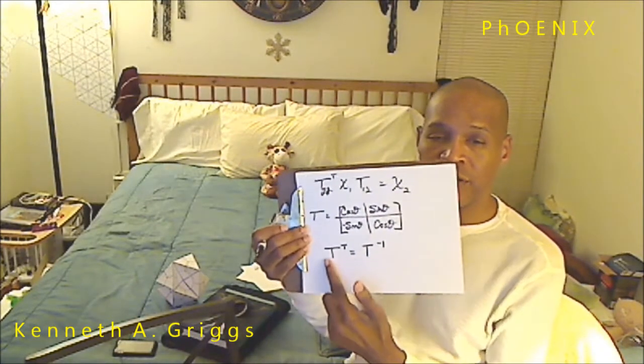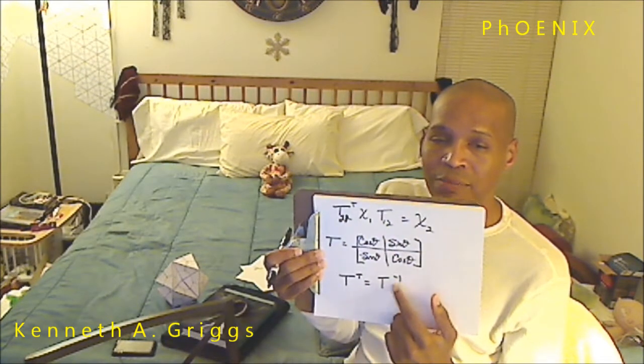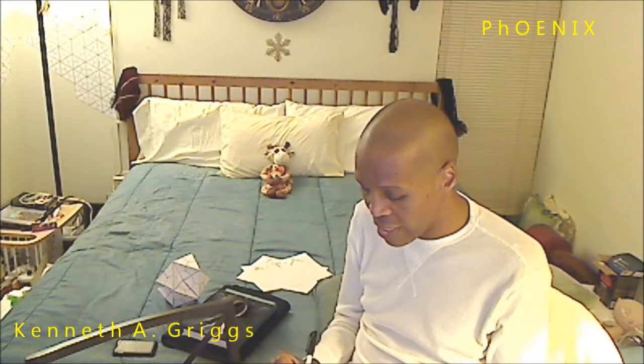So if we transpose this matrix, it should in point of fact be the inverse of that matrix. I'm going to rewrite the matrix using shorthand: theta sub c is the cosine of theta, theta sub s is the sine of theta, minus theta sub s is minus sine of theta, and theta sub c again is cosine of theta.